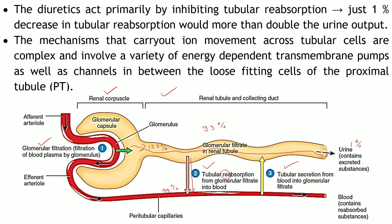Supposing diuretics decrease reabsorption by just 1 percent — what will happen? Here 99 percent is getting reabsorbed. If you give diuretics which inhibit this process by just 1 percent, then 98 percent of the tubular fluid gets reabsorbed, and that 1 percent decrease in reabsorption gets converted into urine. So it adds to the original 1 percent of urine, making urine output 2 percent of the filtrate — it is doubled. Just 1 percent decrease in reabsorption can double the urine output.